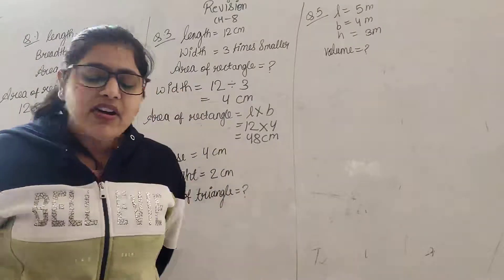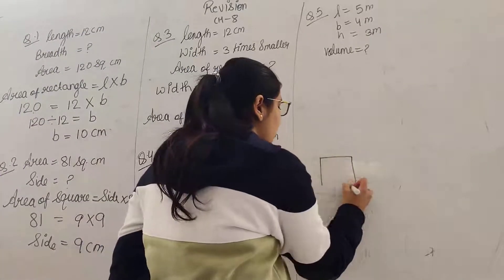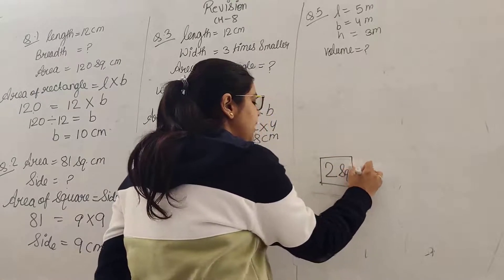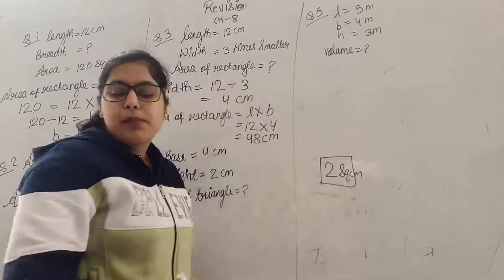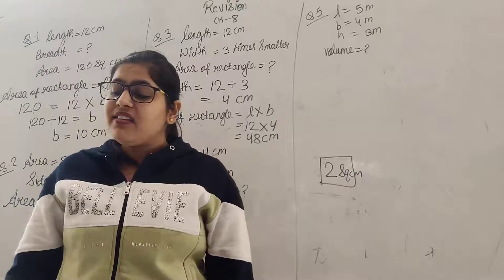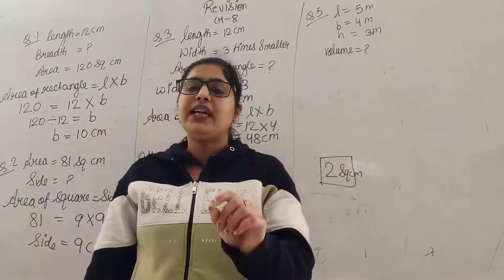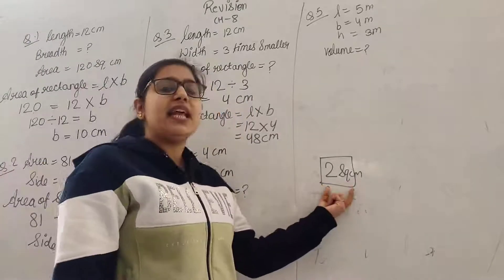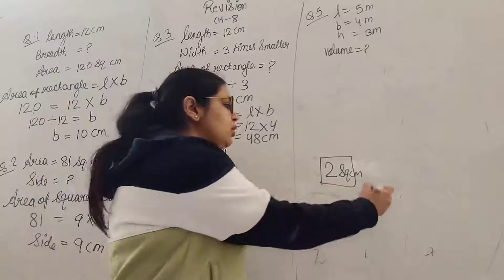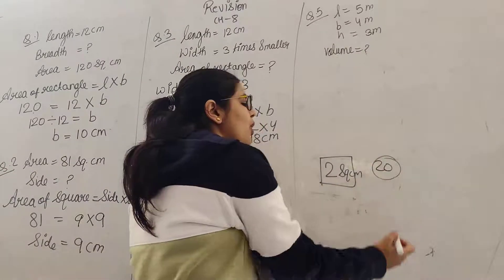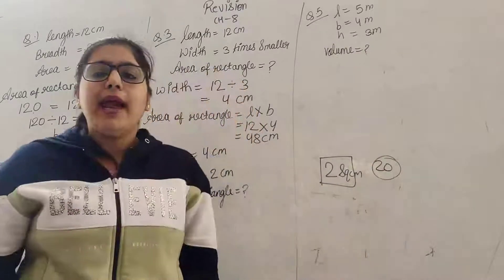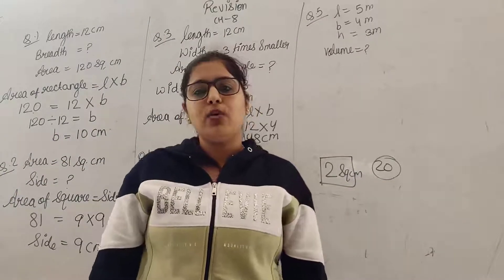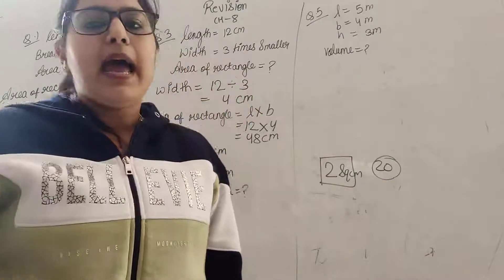एक और word problem है, exercise 8.2 की ही. The area of a square is 2 square centimeter — 1 square का area है 2 cm². फिर पूछ रहा है: what is the area of 20 squares? जब 1 square का area इतना है, तो 20 squares का area निकालने के लिए 20 को 2 से multiply कर दोगे, and you will get your answer.